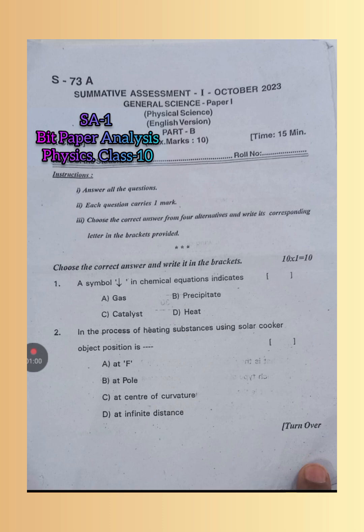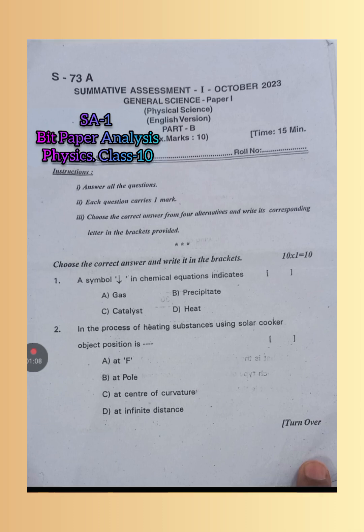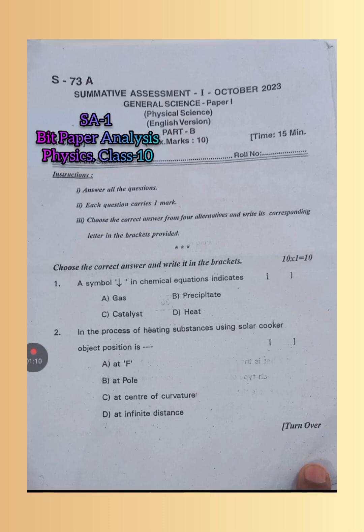Next, in the process of heating substances using solar cooker, object position is - you always remember, object position is always at focus only. When we use a solar cooker, we keep the object at the focus. So A is the right answer.